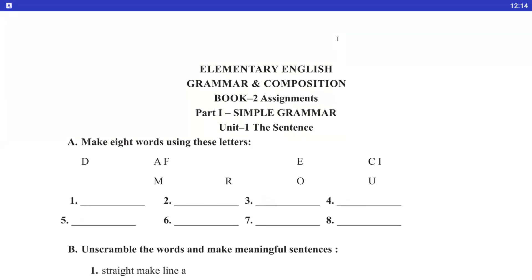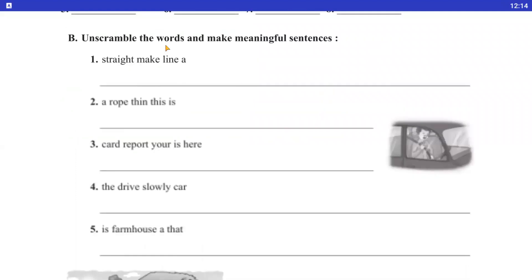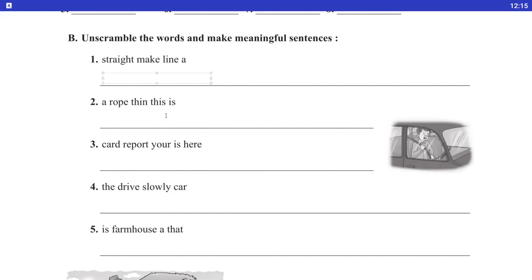Moving to the next exercise, which is about unscramble the words and make meaningful sentences. Number one, what is this? Straight, make, line, a. The words you have, unscramble the words, you have to arrange a sentence. Before you start to do it, let me clear one thing. The first sentence, the word or letter should be capital. And after the sentence, we have to put full stop. Getting my point?